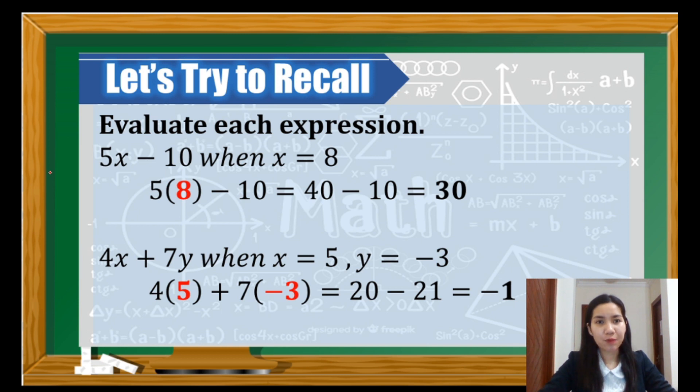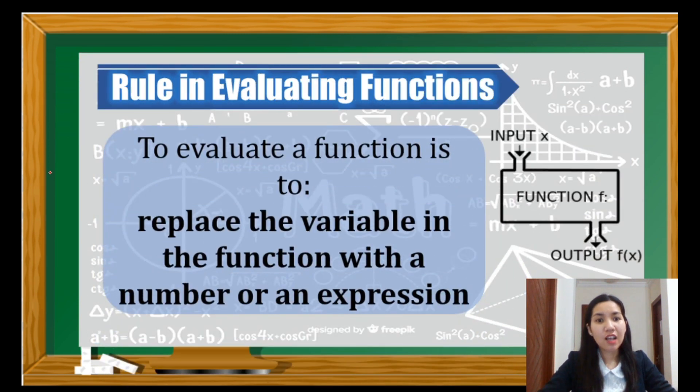So let's have the rule now. The rule is, we replace the variable in the function with a number or an expression. We can think of evaluating function as a function machine, just like the image at the right. So we take an input x inside the function, which goes to a certain process, then produces an output, which is the f(x).